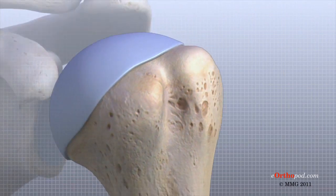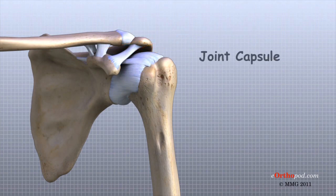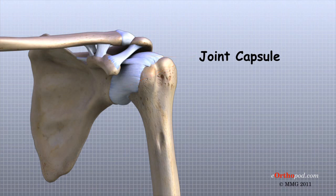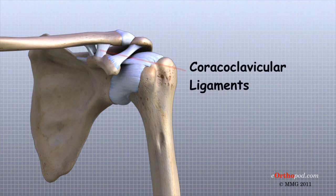There are several important ligaments in the shoulder. Ligaments are soft tissue structures that connect bones to bones. The joint capsule is a watertight sac that surrounds a joint. In the shoulder, the joint capsule is formed by a group of ligaments that connect the humerus to the glenoid. These ligaments are the main source of stability for the shoulder and help hold the shoulder in place and keep it from dislocating. Ligaments attach the clavicle to the acromion in the AC joint. Two ligaments connect the clavicle to the scapula by attaching to the coracoid process, a bony knob that sticks out of the scapula in the front of the shoulder.